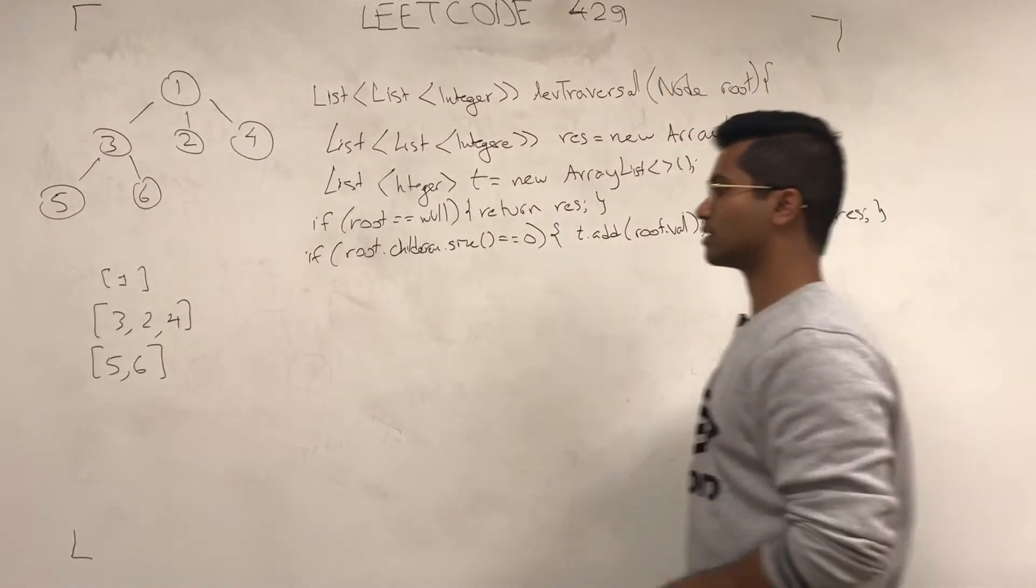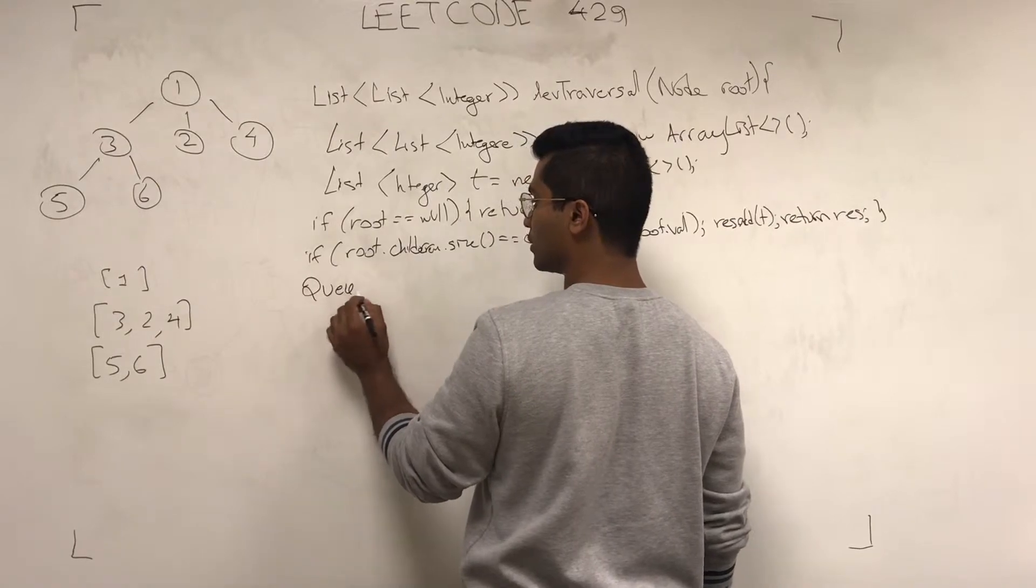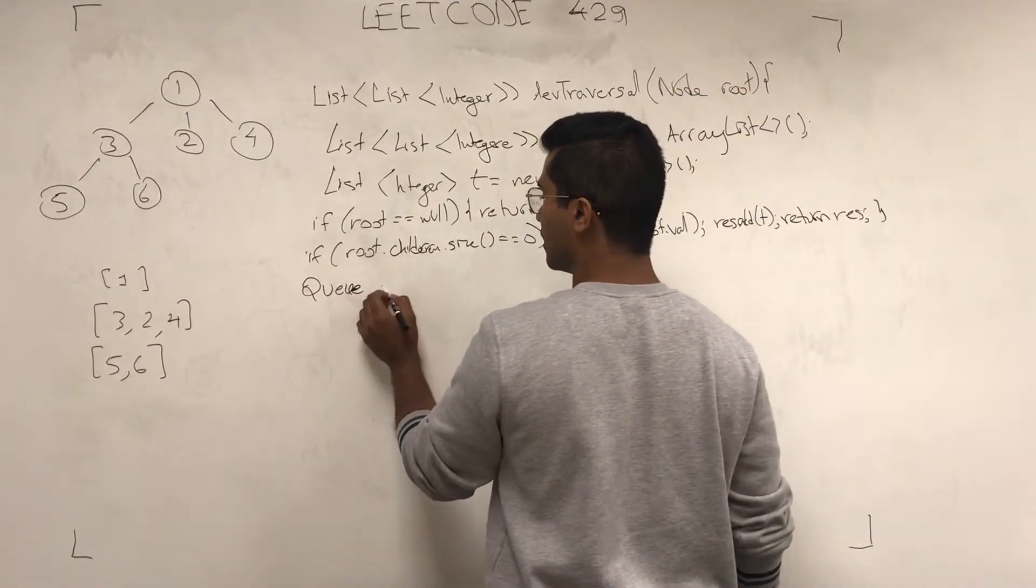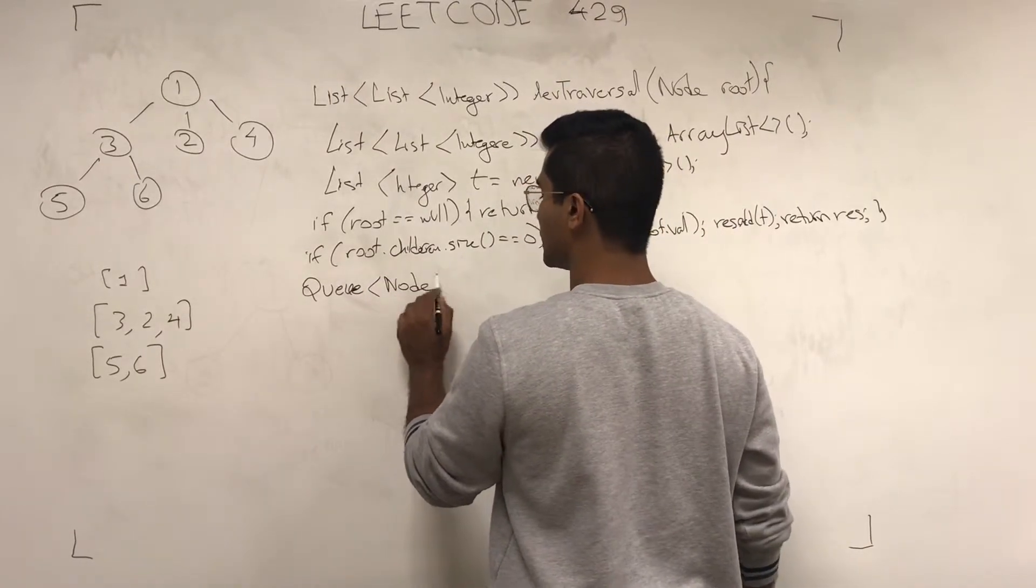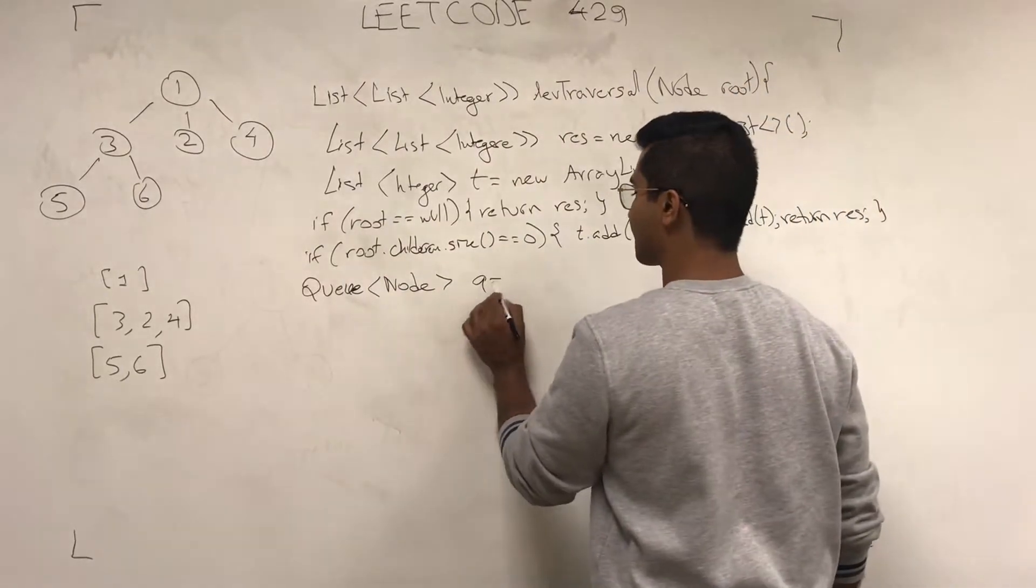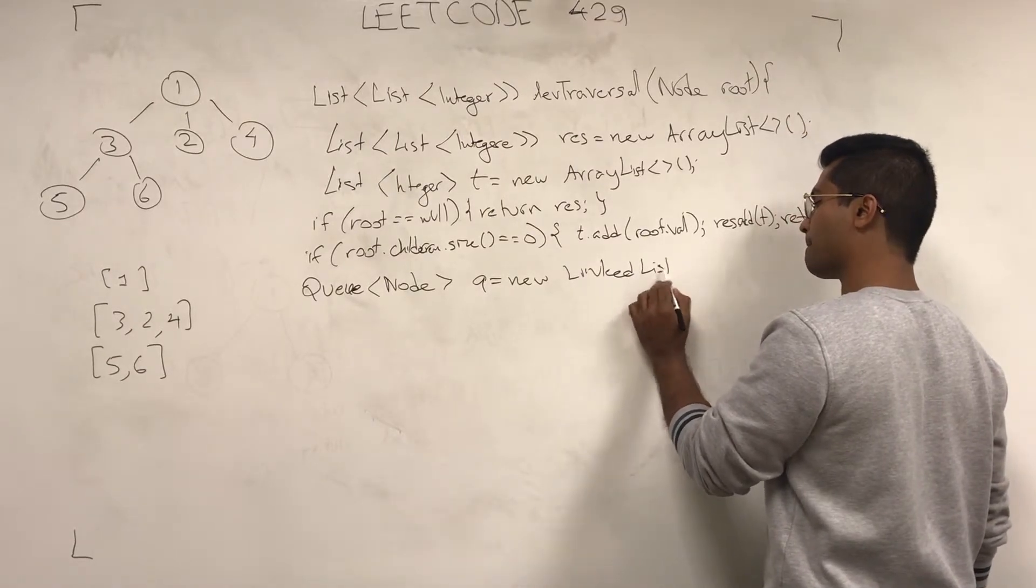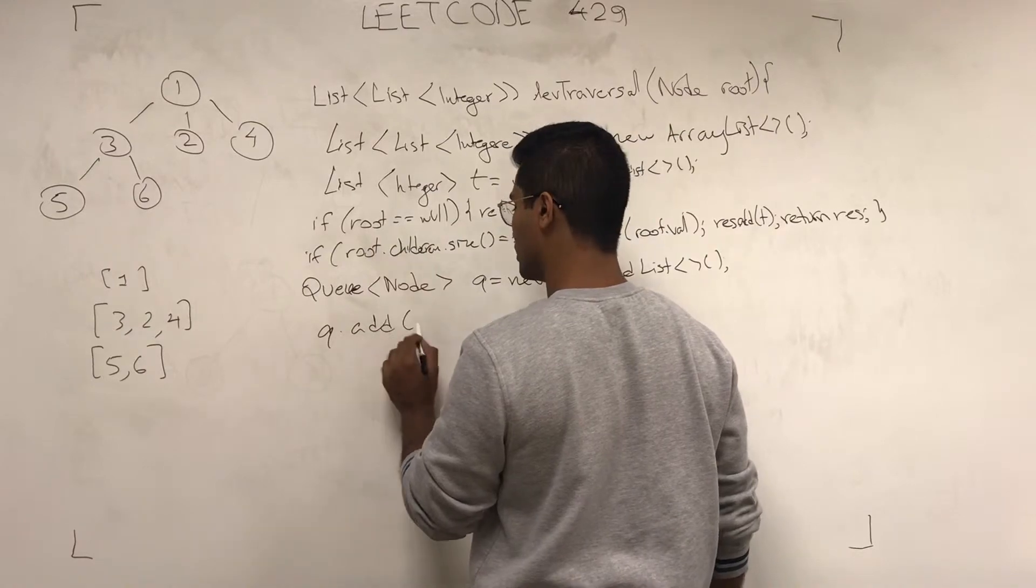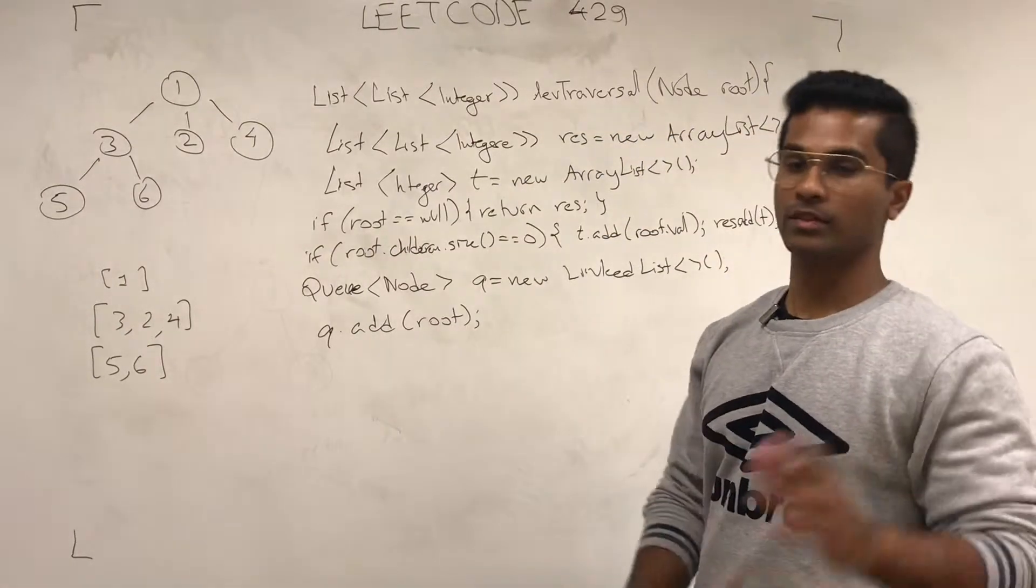So, that's just the base case. Now, let's make the queue and get into the meat of the algorithm. Queue of nodes actually. And we don't need a visited set because this is a tree and not a graph. New instantiated as a linked list. And I'll just add the root node in it.